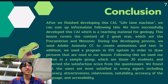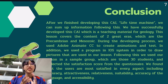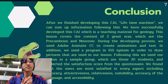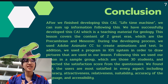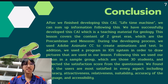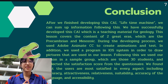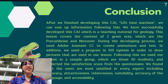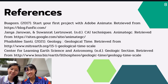The next is conclusion. After we finished developing this CAI, Lifetime Machine, we can sum up the information as follows. We have successfully developed this CAI, which is a teaching material for geology. These lessons cover the content of two geological eras, which are the Precambrian and Mesozoic. We used our lessons with a sample group of 30 students and collected satisfaction scores from the questionnaire. We found that the users are more satisfied in every aspect, including accuracy, attractiveness, relativeness, susceptibility, and accessibility. Thank you for watching. Bye.